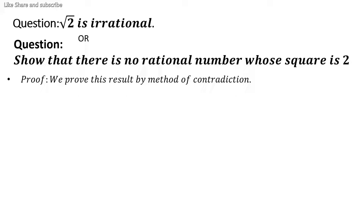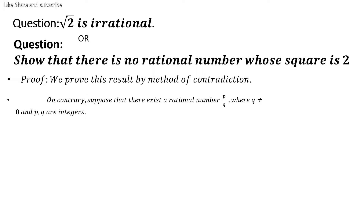The proof is very simple and we prove it by the method of contradiction. The method of contradiction is very useful in mathematics for proving theorems. We want to prove that under root 2 is an irrational number, so on the contrary, suppose that...